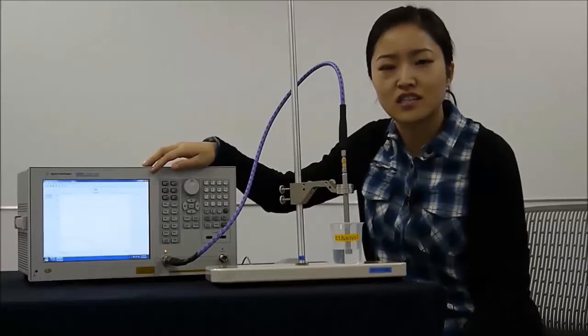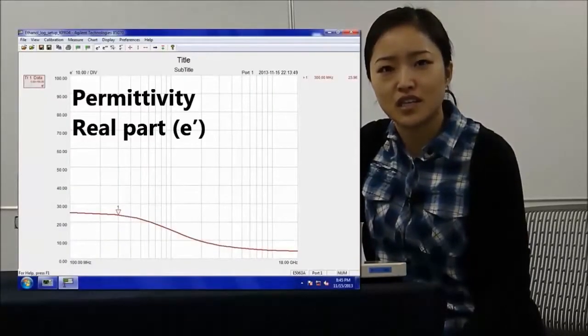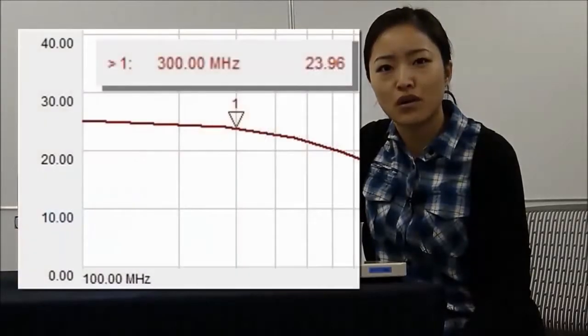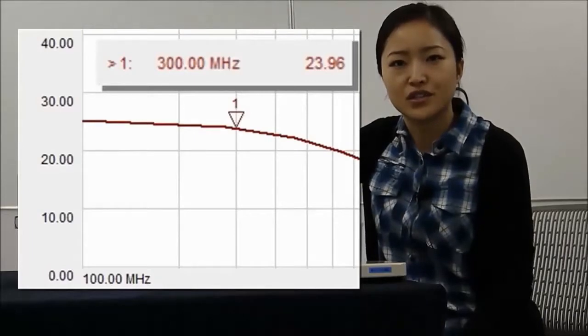Here we're looking at the real part of the permittivity, or dielectric constant. The typical value of ethanol is around 24 depending on temperature. We can see that the result is very close to typical.